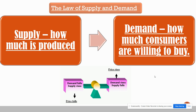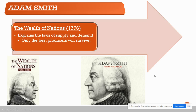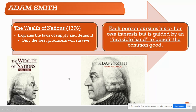One of the key figures for free enterprise is Adam Smith, who wrote 'The Wealth of Nations,' which explains the laws of supply and demand. He believed in a kind of survival of the fittest — only the best producers and companies would survive. He believed each person pursues their own interest but is guided by an 'invisible hand' to benefit the common good. He believed businesses guided by this invisible hand would do good for everyone, though we've found that isn't entirely true.